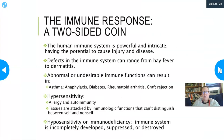The immune response is a two-sided coin. The immune system is powerful and intricate with a potential to cause injury and disease. Defects can range from hay fever to dermatitis, and different immune deficiencies exist. Abnormal or undesirable immune functions can result in asthma, anaphylaxis, type one diabetes, rheumatoid arthritis, and graft rejection.